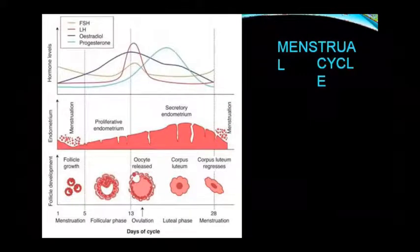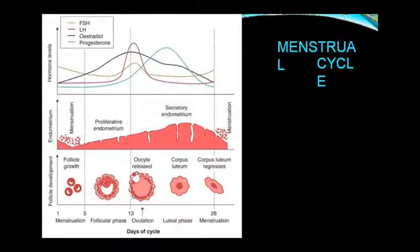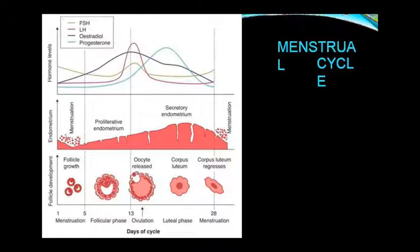Now for the menstrual cycle, FSH, LH, estradiol, and progesterone play key roles. Menstruation is days 1 to 5, during which follicle development begins and endometrium changes occur — it is desquamated and shed, while hormonal levels change. FSH level is lower during this period. Days 5 to 13 involve follicle development, and the endometrium proliferates and starts to increase in thickness. After day 13, on day 14, ovulation is released and the endometrium is also thickened. The luteal phase follows, and the endometrium becomes secretory. FSH shows its first rise on day 1.